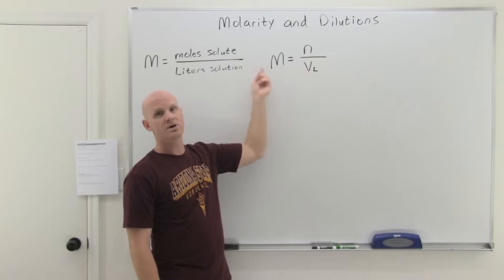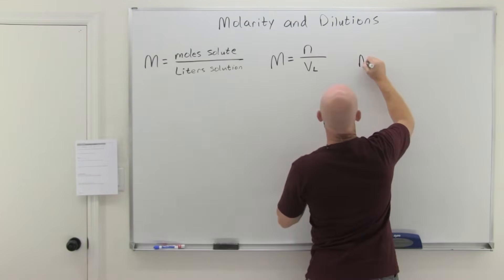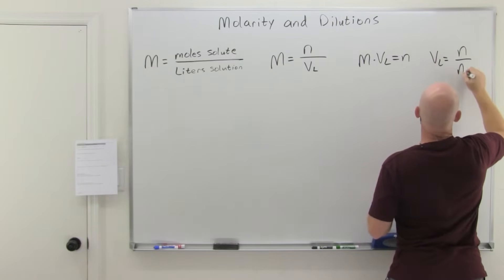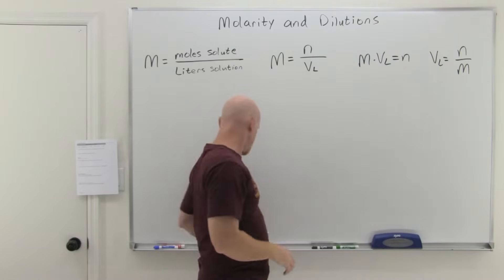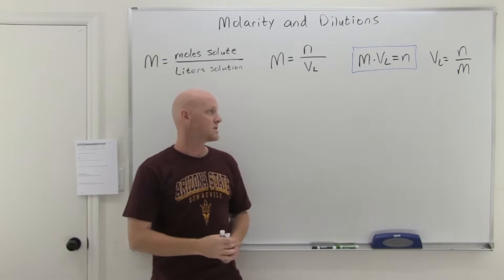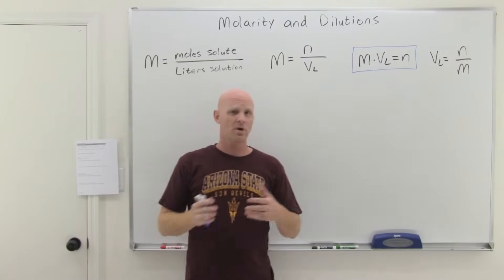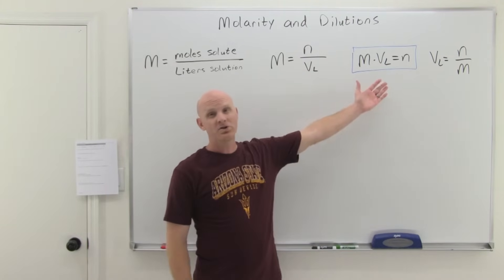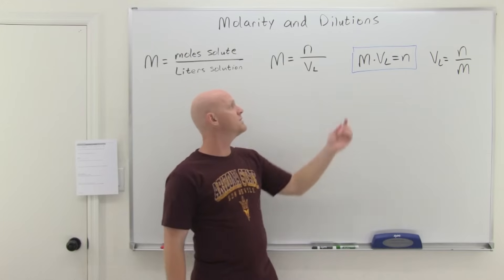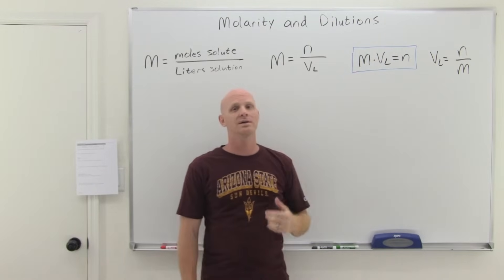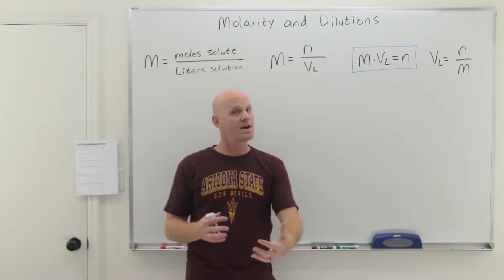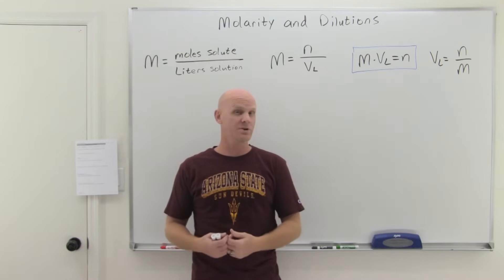If I gave you the moles of solute and the liters of solution, you could solve for molarity. Rearranging, you could take molarity times the volume in liters to get the moles. And finally, you could solve for volume in liters as moles over molarity. Especially important is this middle one: moles = molarity × volume in liters — because we now have a new way of calculating moles. If you know both the molarity and the volume of a solution, you know the moles of solute. Once you know the moles, you can convert to grams, molecules, atoms, or moles of something else via a mole-to-mole ratio from a balanced chemical reaction.